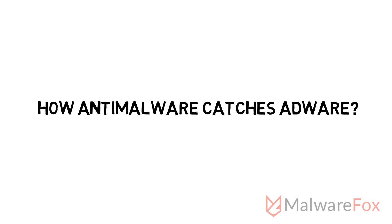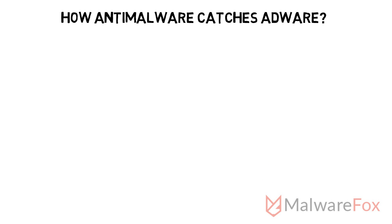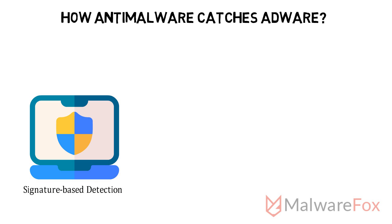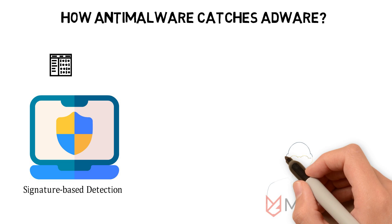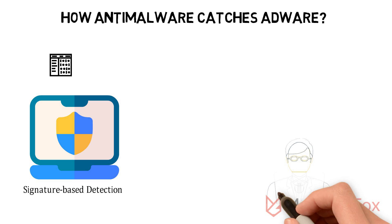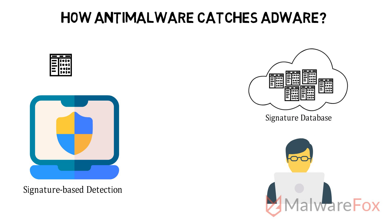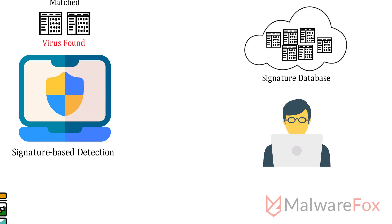How anti-malware catches adware: Anti-malware uses the signature-based detection method to catch adware. Security professionals flag the adware networks in the virus database, and whenever it is found on the user's computer, the anti-malware catches it.